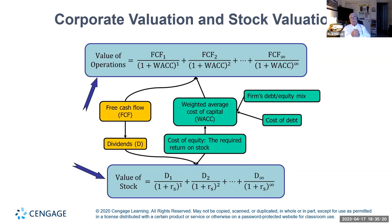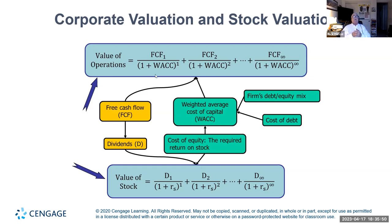Free cash flow is a very good way of looking at the value of a company — you take that free cash flow and divide it by your cost of capital. The cost of capital is the combination of the firm's debt and equity capital structure. The capital asset pricing model, which we talked about last week, is how to determine the cost of equity. The cost of debt is basically your after-tax cost of debt.